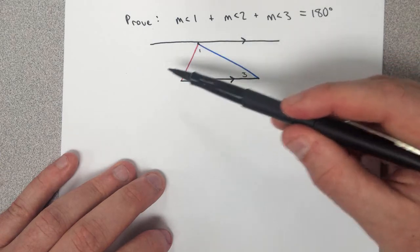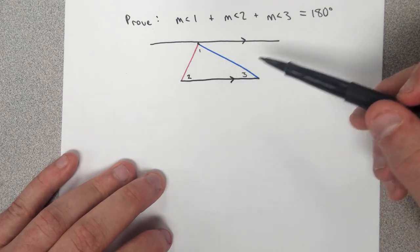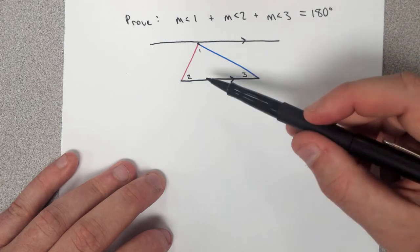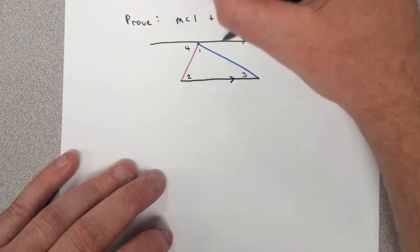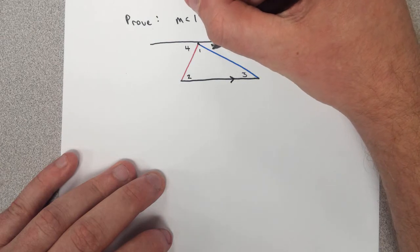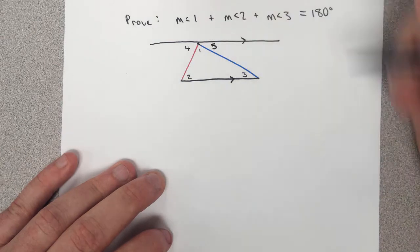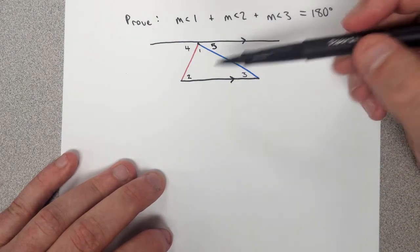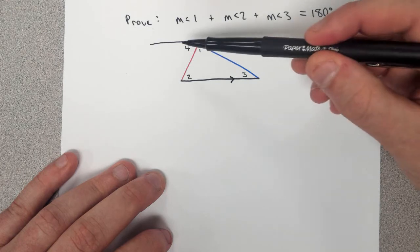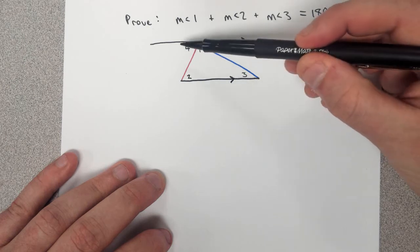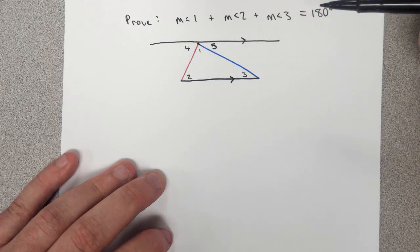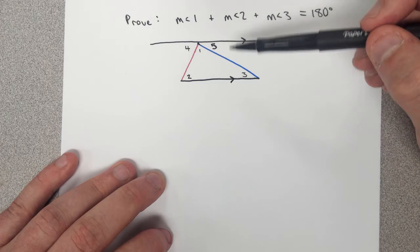Now notice that as we constructed this line, we have made two new angles. Let's call those angle 4 and angle 5. Notice that angle 4, angle 1, and angle 5 these all form a straight angle which is 180 degrees by definition.